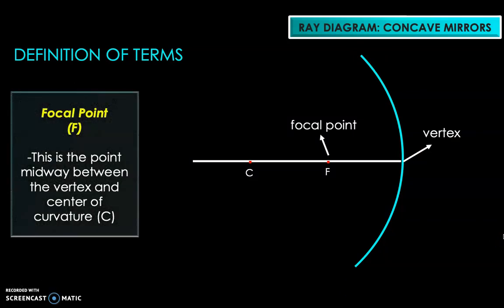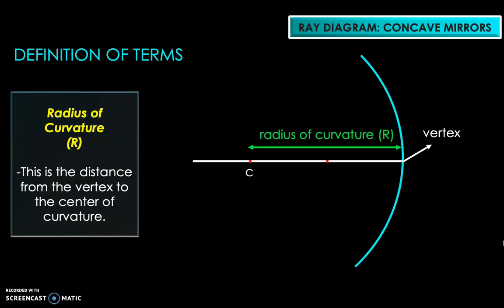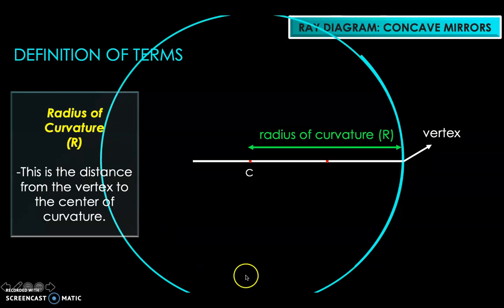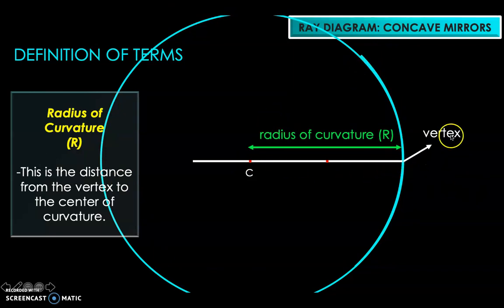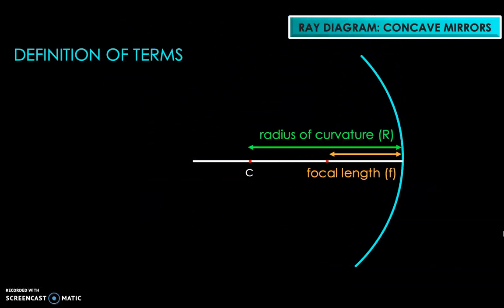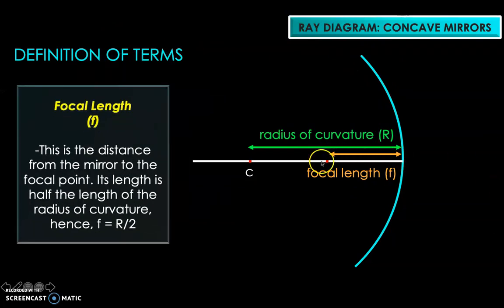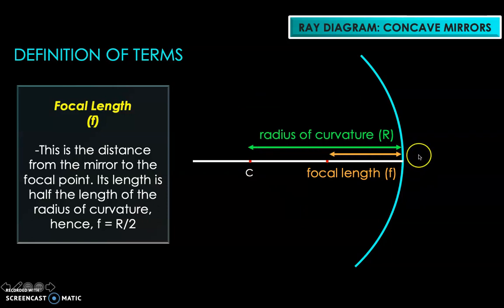Next we have the focal point, which is the point midway between the vertex and the center of curvature, represented by capital letter F. Next is the radius of curvature — if we imagine the mirror as part of a sphere, the radius of that sphere is the radius of curvature of the mirror. The focal length is simply the distance from the mirror to the focal point, and you can notice that the focal length is actually half the length of the radius of curvature.